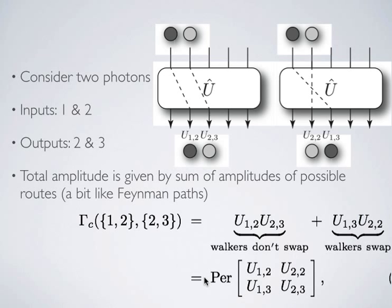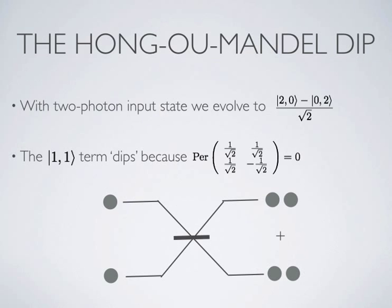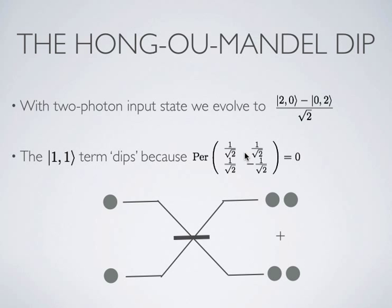Here's a simple example: the Hong-Ou-Mandel dip, which anyone in quantum optics is familiar with. You put two photons into a 50-50 beam splitter — one photon in the top mode, one in the bottom — using a balanced beam splitter described by the Hadamard matrix. At the output, you find a superposition of both photons in the first mode or both in the second; you never measure one photon in each output mode. The coincidence events are suppressed because the permanent of the relevant submatrix of the beam splitter equals zero, which is why those coincidence terms vanish.